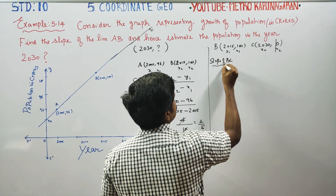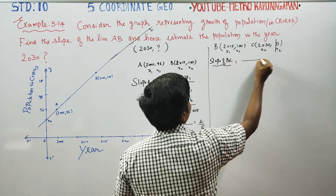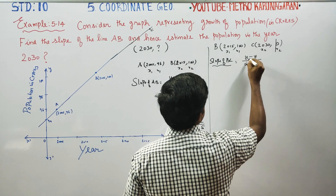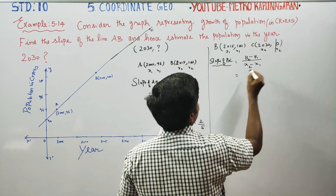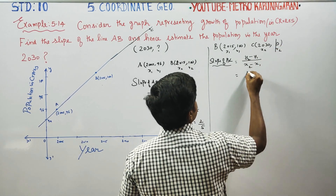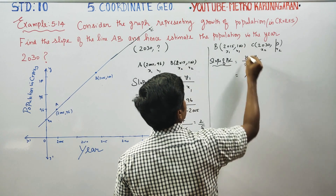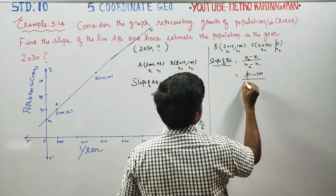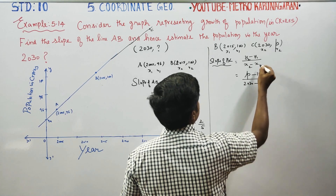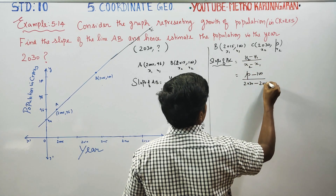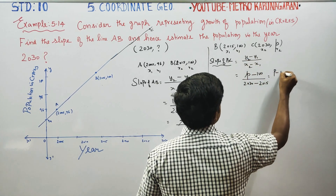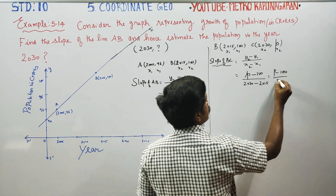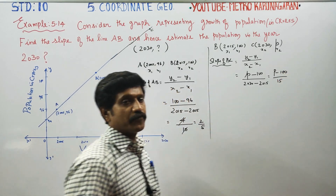Using the slope formula for BC: (y2 − y1) / (x2 − x1) = (p − 100) / (2030 − 2015) = (p − 100) / 15. So slope of BC is (p − 100) / 15.